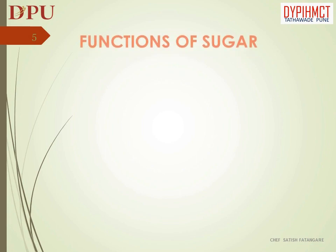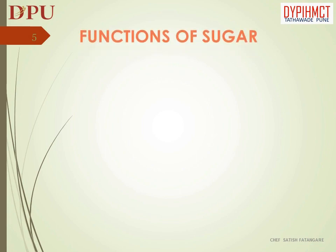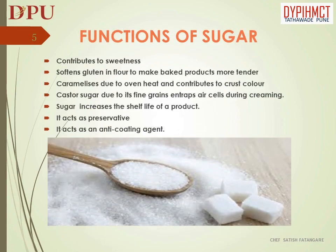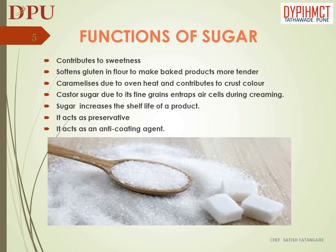In this slide we will discuss about the functions of sugar. Sugar contributes to sweetness. It softens gluten in flour to make baked products more tender. Sugar caramelizes due to oven heat and contributes to crust color. Custard sugar, due to its fine grains, entraps air cells during creaming. Sugar increases the shelf life of a product and acts as a preservative. Sugar also acts as an anti-coating agent.